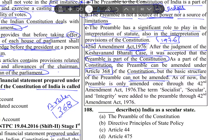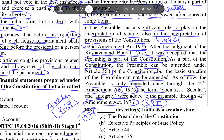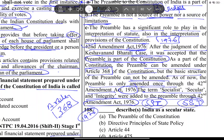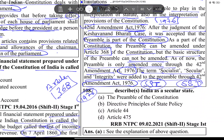As of now, the preamble has been amended only once — through the 42nd Amendment Act of 1976. The terms socialist, secular, and integrity were added to the preamble through the 42nd Amendment Act of 1976.